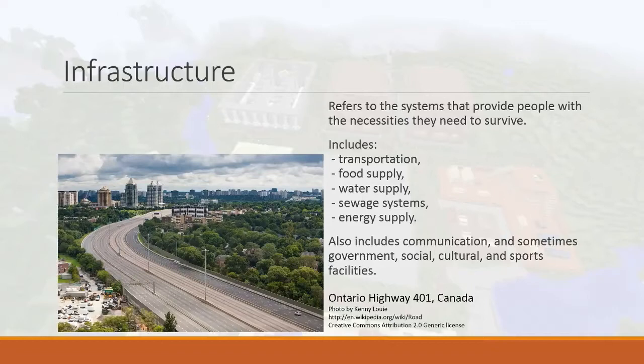Sometimes people also consider government institutions, cultural institutions, and sports facilities as infrastructure — they call them soft infrastructure. Things like museums, art galleries, and sports stadiums don't provide food, water, or electricity, but people still use them. Whether or not you consider that to be infrastructure is a matter of interpretation, but those things are also necessary in cities and societies.